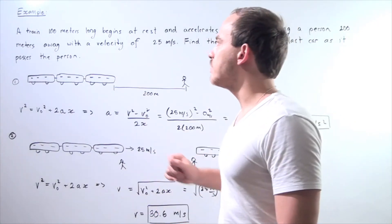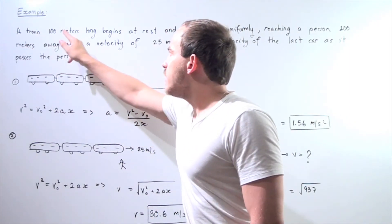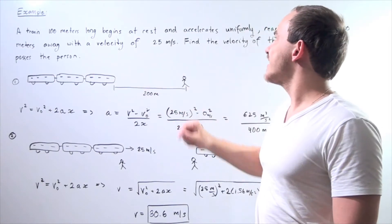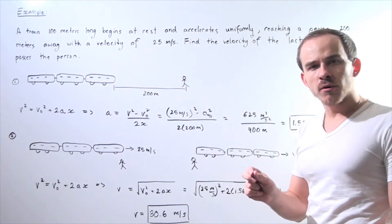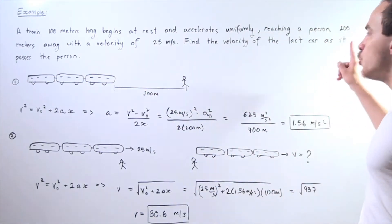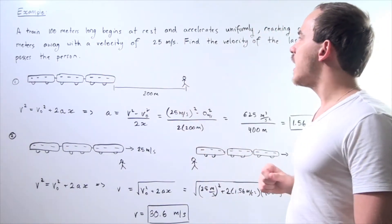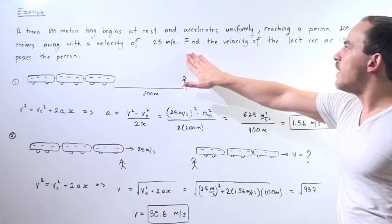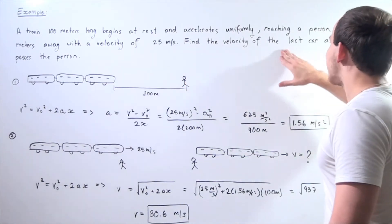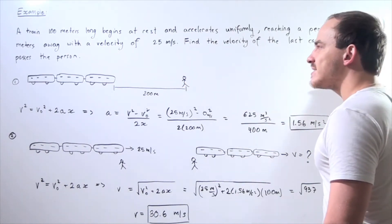So let's look at the following example. A train 100 meters long begins at rest and accelerates uniformly, reaching a person 200 meters away with a velocity of 25 meters per second. Find the velocity of the last car as it passes the person.